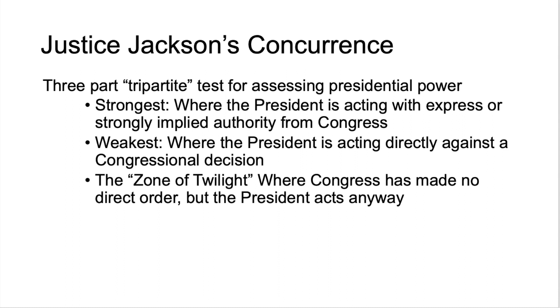The tripartite test has three levels of presidential power. At the highest level — the strongest — is when the president is acting with express or strongly implied authority from Congress, meaning Congress has said yes, the president can do this particular thing. At the third level, the weakest, the president is acting in direct defiance of a congressional order — Congress has said you cannot do this, and the president does it anyway — and that is not constitutional. In the middle is what we call the zone of twilight, where Congress has made no direct order about what the president can or cannot do, but the president acts anyway.